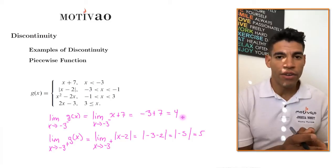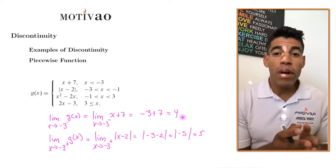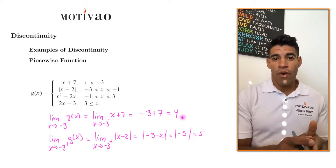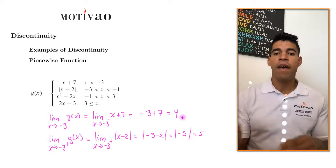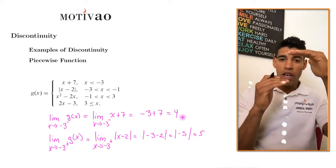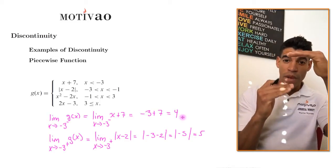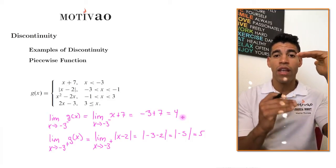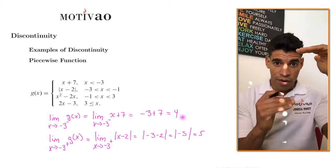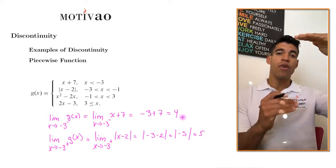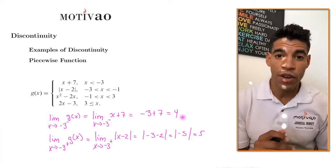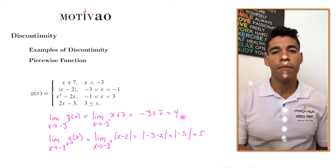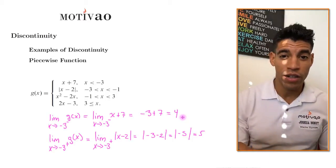The function is not continuous at negative 3. But what type of discontinuity is this? From the left is 4 and from the right is 5 — there's a jump from the functions, a space in between. Therefore, this is an essential discontinuity — specifically a jump discontinuity — because the limits are different.